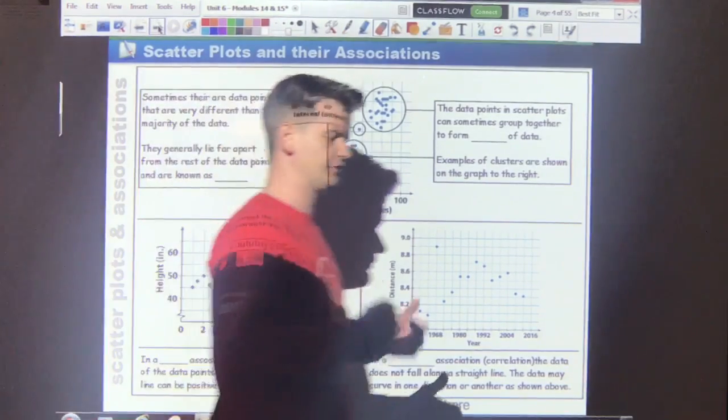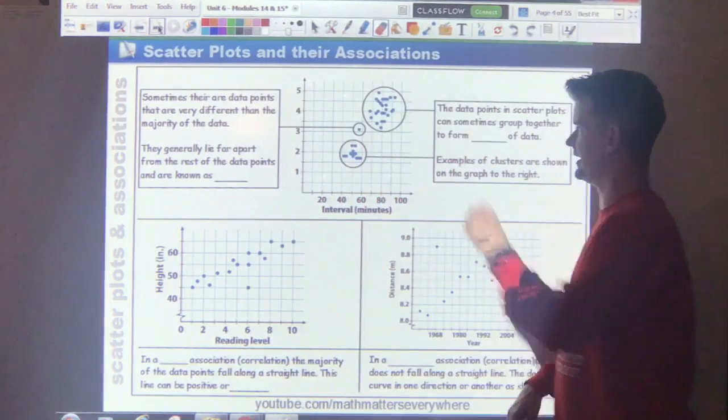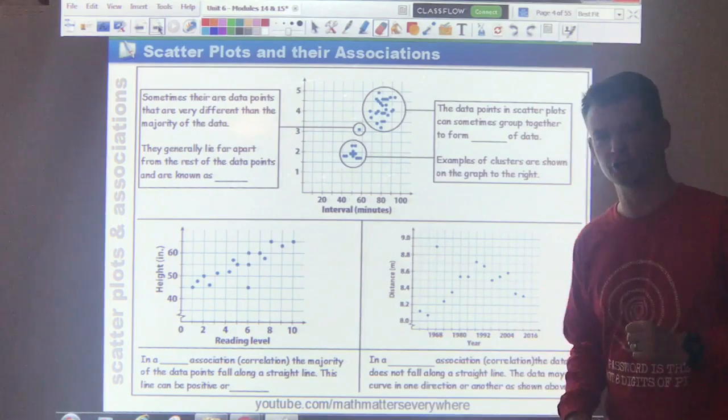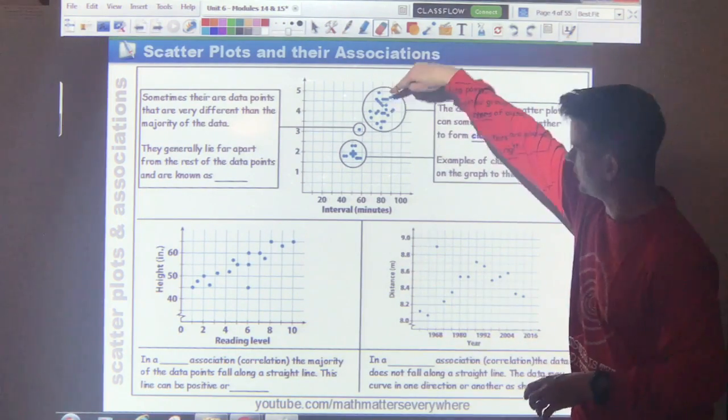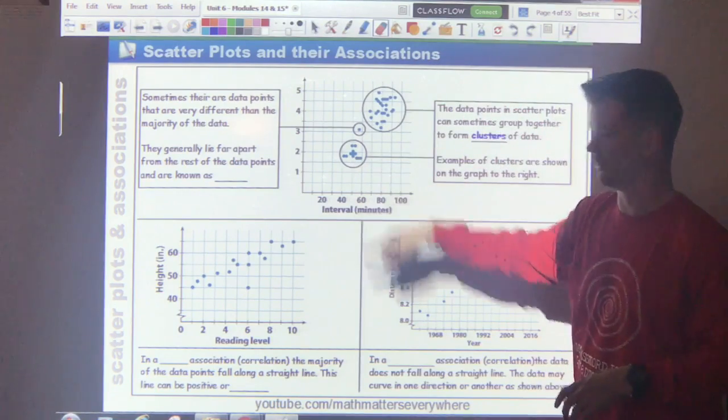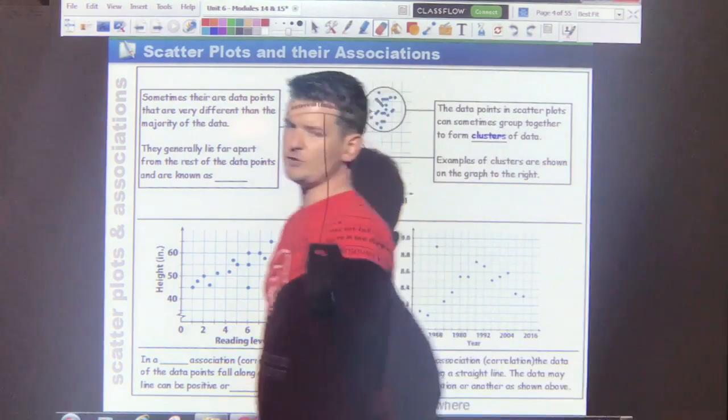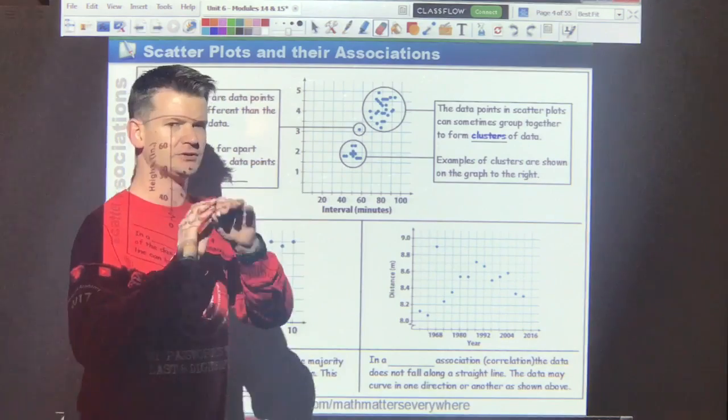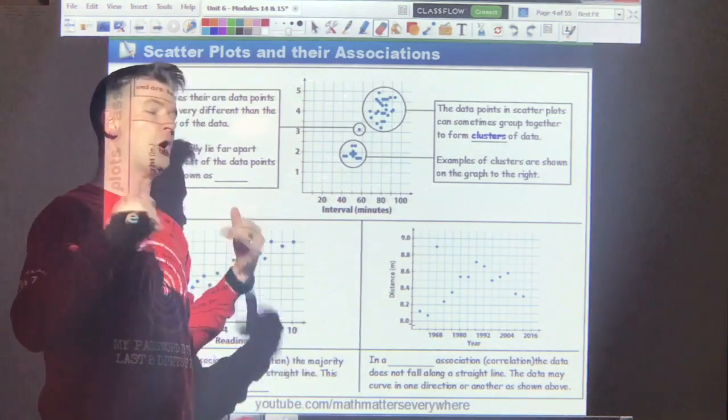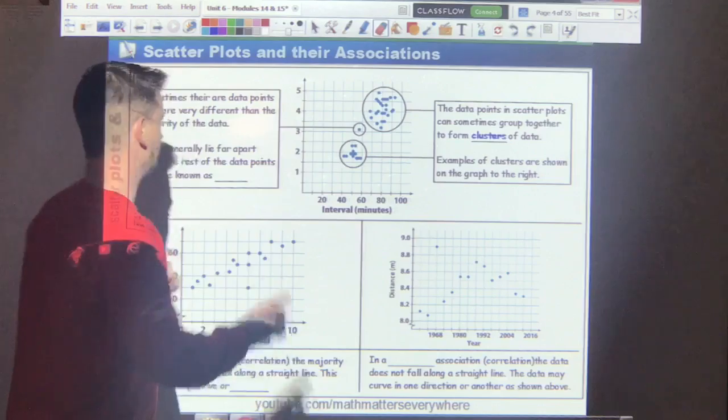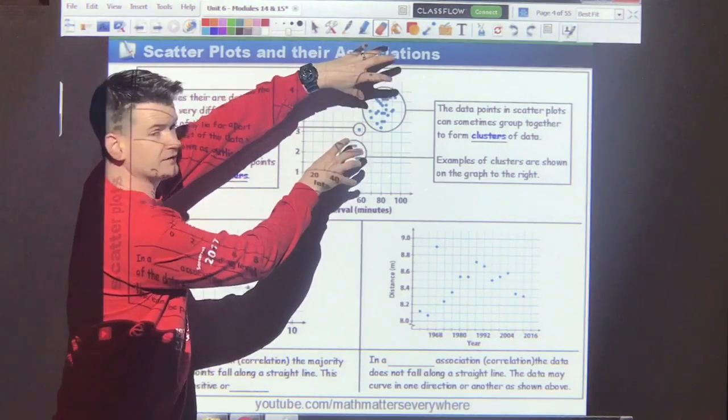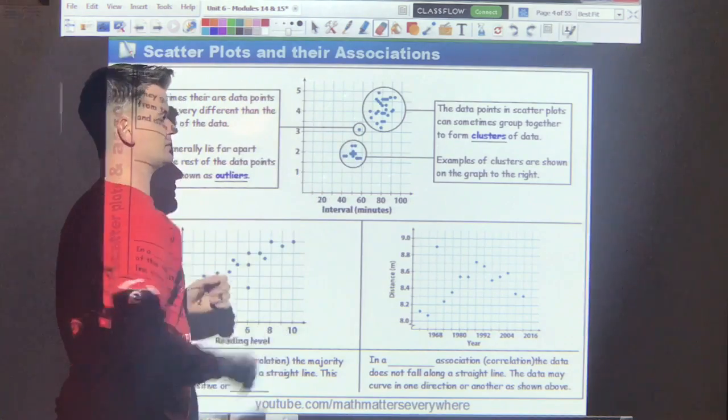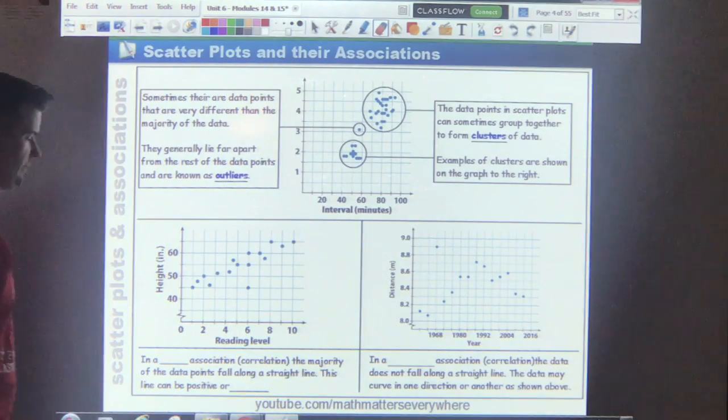Inside our scatterplot, we have some different types of data. If a lot of the data is grouped together, that is known as a cluster. We have a cluster of data here, and we have a cluster of data here. If you have one or two or a couple dots that are kind of far away or kind of on their own, away from the rest of the data, that is known as an outlier. So clusters, big groups of data all together, outliers, little teeny tiny pieces of data all by themselves.